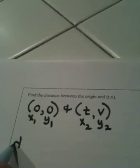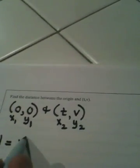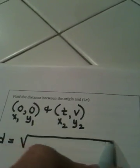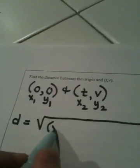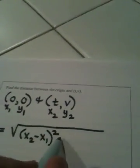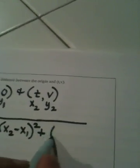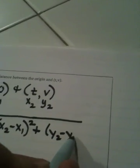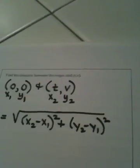Recall the distance formula. d equals the square root of x sub 2 minus x sub 1 quantity squared. Put a plus in the middle. y sub 2 minus y sub 1 quantity squared.